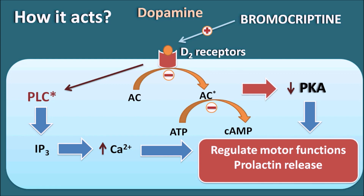Bromocriptine is also used in acromegaly, a condition where there is excessive growth hormone release. Although dopamine normally increases growth hormone release, when Bromocriptine is given it paradoxically decreases growth hormone release by a negative feedback mechanism. Therefore, Bromocriptine can be used in the treatment of acromegaly to suppress growth hormone release.